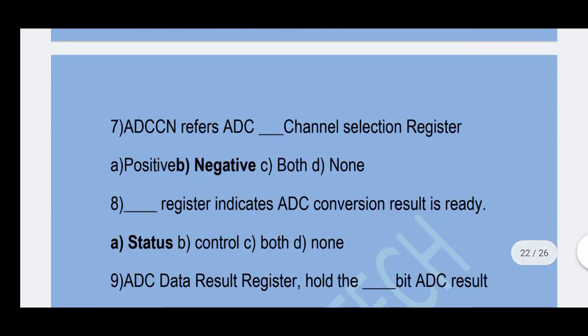Next question: ADCCN refers to the ADC channel negative selection register. Option B — Negative is the correct answer.